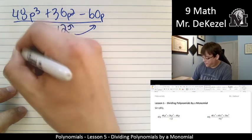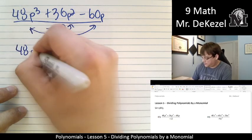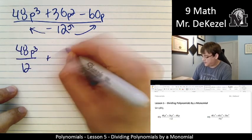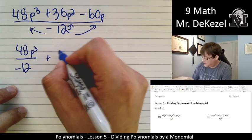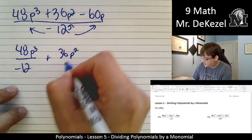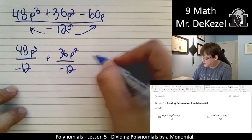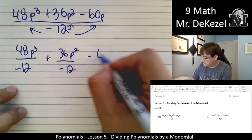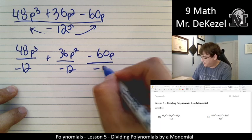So we could have 48p³ divided by -12, 36p² divided by -12, and then -60p divided by -12.